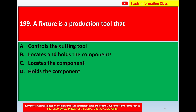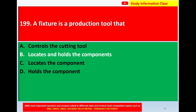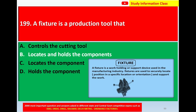Option A: controls the cutting tool. Option B: locates and holds the components. Option C: locks the component. Option D: holds the component. The correct answer is option B, locates and holds the components. A fixture is a work-holding or support device used in the manufacturing industry to securely locate, position, and support the work. For question 199, correct answer is option B.